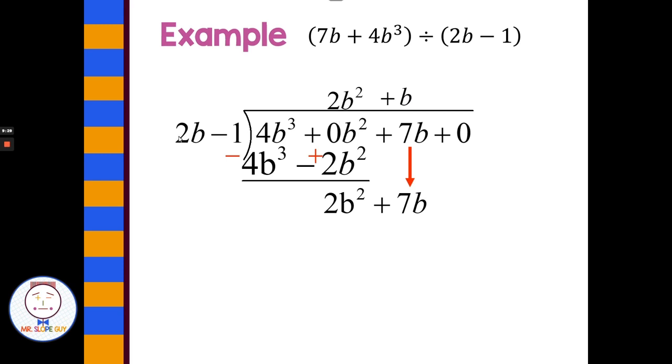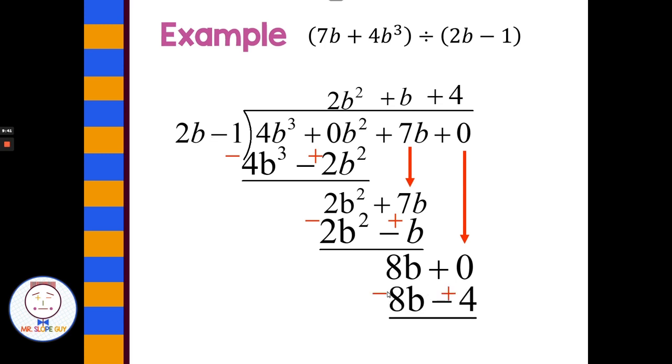Switch my signs, add, bring down the 0. What times 2b is 8b? Positive 4. And when I switch signs and add, I end up with the remainder of this. I just take the remainder and put it over 4 plus 2b.